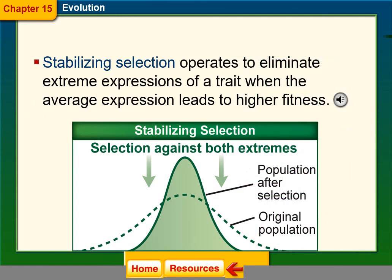Stabilizing selection eliminates extreme expressions of a trait when the average phenotype leads to higher fitness. If you remember our micro-evolution lab, this would correspond to the heterozygous genotype being the most fit.